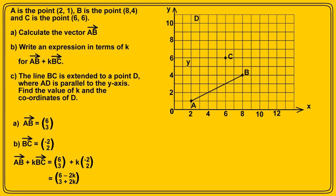So now for the more difficult part, C. The line BC is extended to a point where AD is parallel to the y-axis, which means in simple terms that D must be directly above point A.